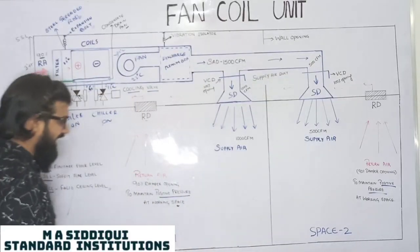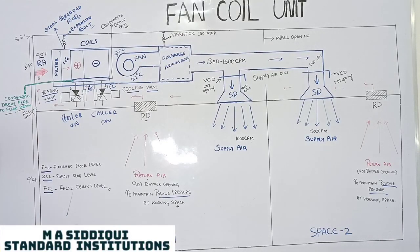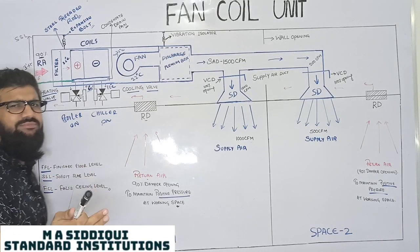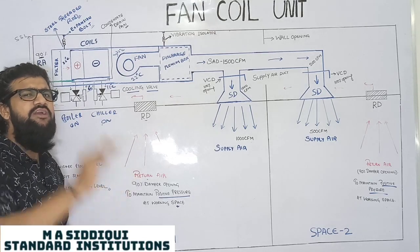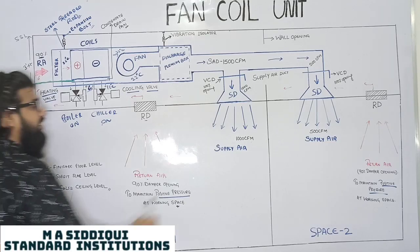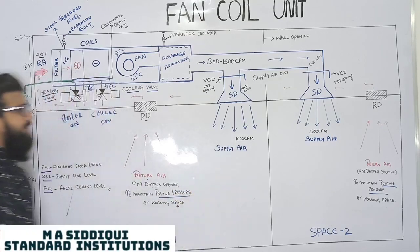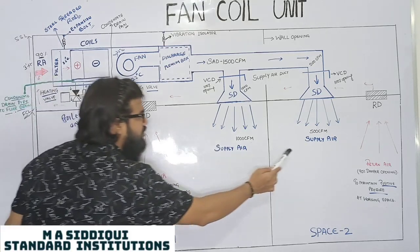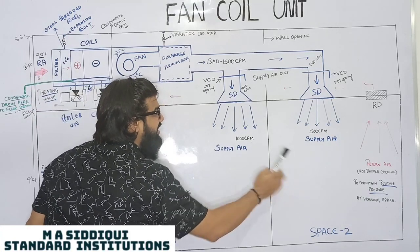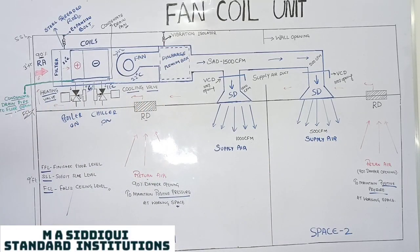So in this scenario, I have taken two spaces, space 1 and space 2. In space 1, the amount of CFM - what is CFM? It is the unit of air, cubic feet per minute. Here in space 1, 1000 CFM is the supply air, whereas for space 2, the calculated supply air is 500 CFM.